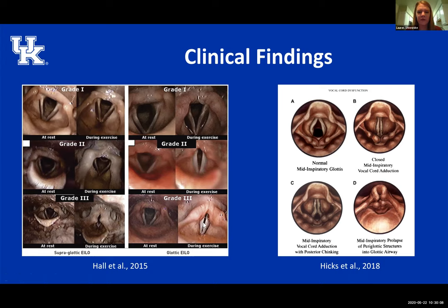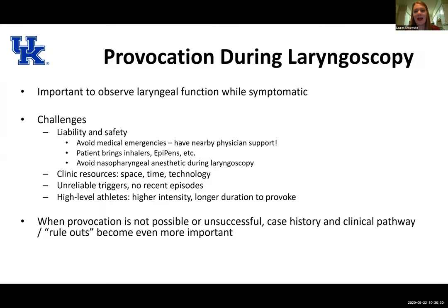Looking at the picture: a grossly normal airway when asymptomatic, but you see that adduction during inspiration when symptomatic — that diamond-shaped glottic gap where the anterior portion is adducted and the posterior glottic chink is maintaining the airway. There are broadly two different presentations: a glottic presentation and a supraglottic one, where other structures like ventricular folds and epiglottis get involved. On the images, you can see vocal folds at rest getting good abduction during inspiration, but during exercise or triggers, you start to see closure. It's really important to get the picture of these patients when they're symptomatic.